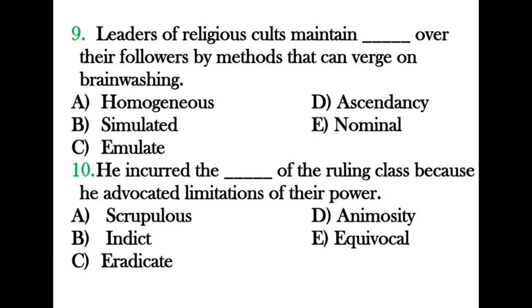Fill in the blank: 'Leaders of religious cults maintain ___ over their followers by methods that converge on brainwashing.' The options are homogeneous, simulated, emulate, ascendancy, and nominal. Homogeneous means having equal constitution throughout. Simulated means copied. Emulate means imitate. Nominal means just by name. The correct answer is 'ascendancy' — meaning power or dominance.